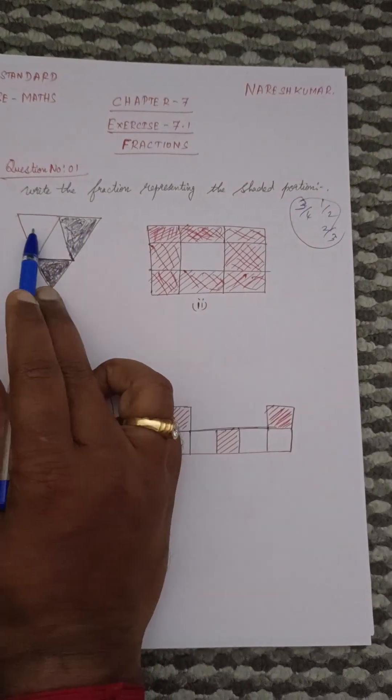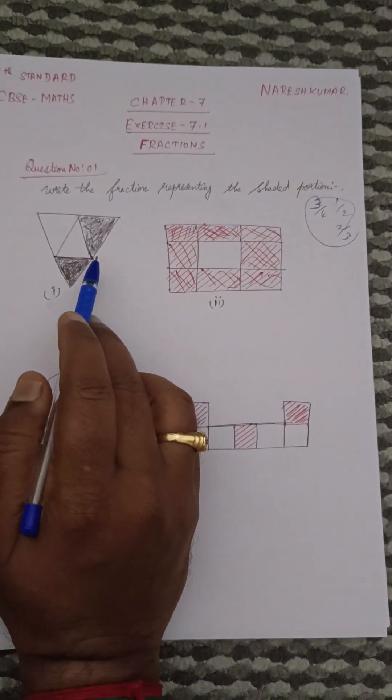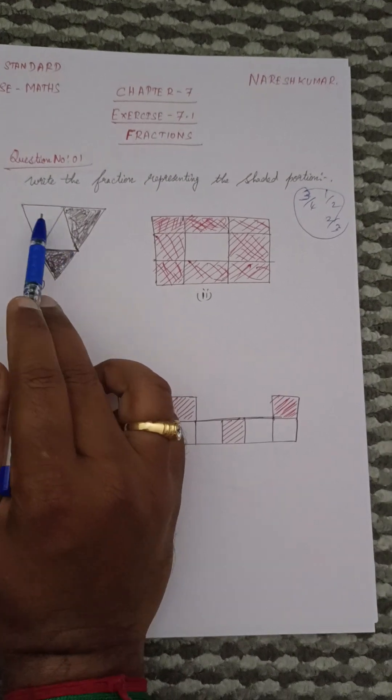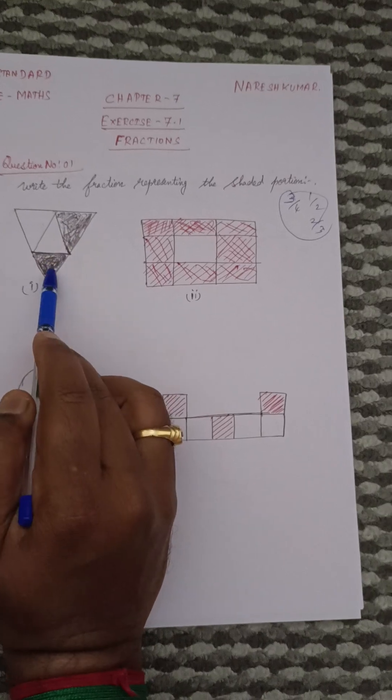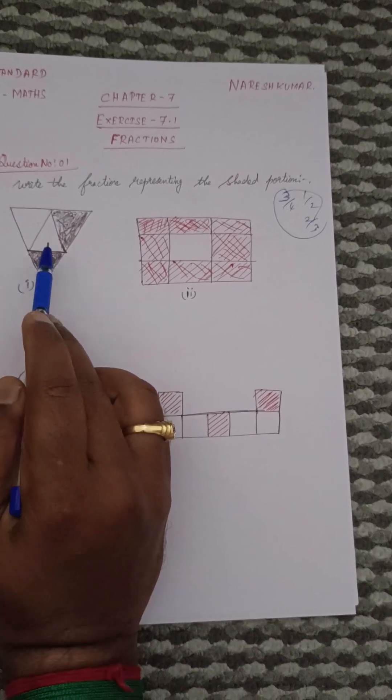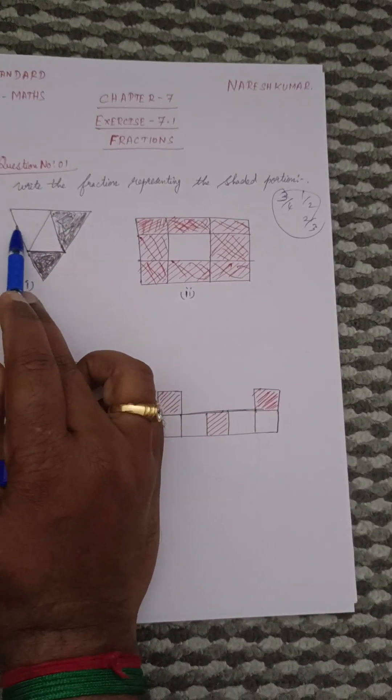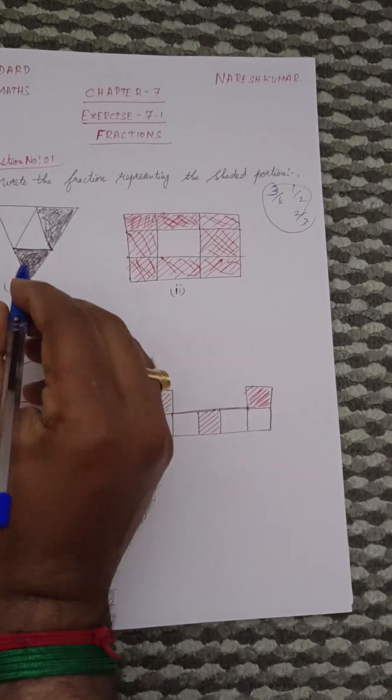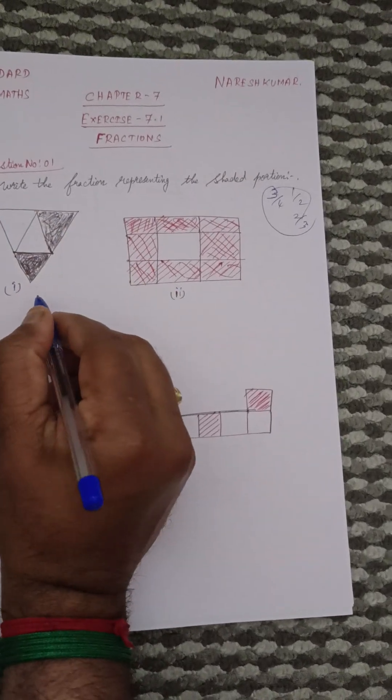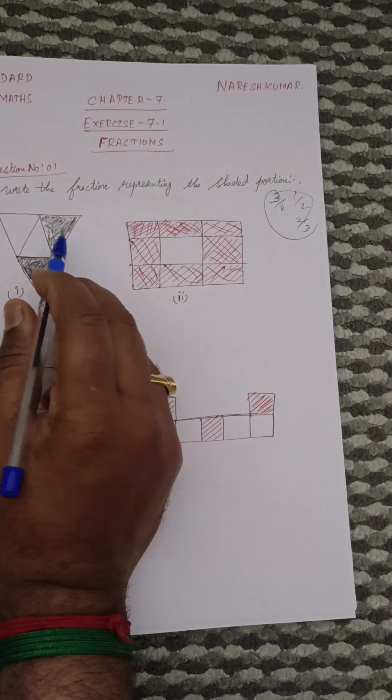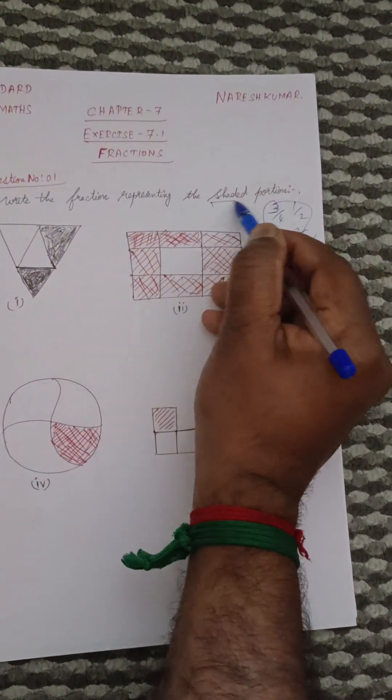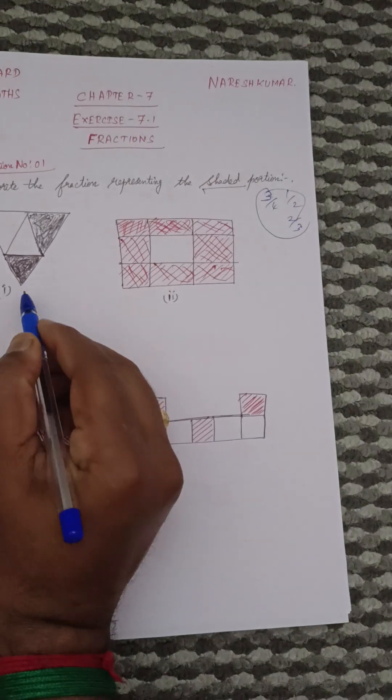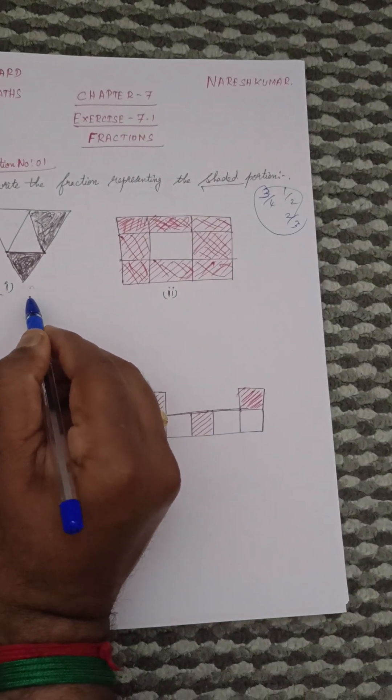For example, this is the diagram. In this diagram, see here, how many things are there? 1, 2, 3, 4. So 4 means total number of spaces. According to this shaded portion, they are saying write the fraction representing the shaded portion. How many shaded portions are there? That should be written in the numerator.